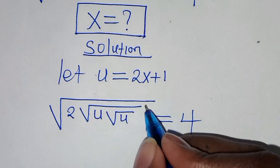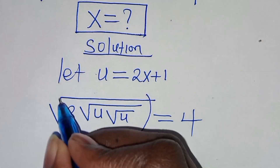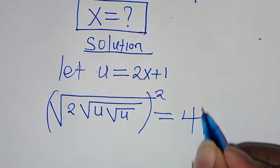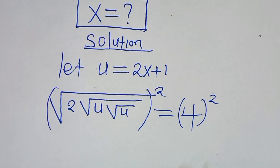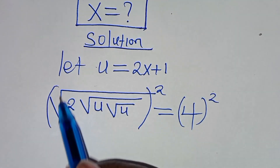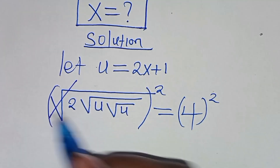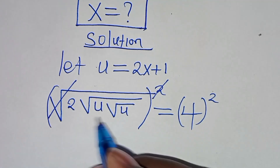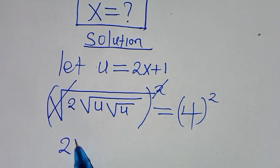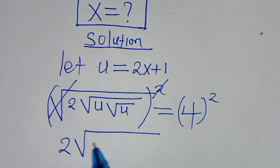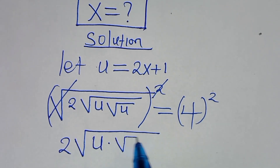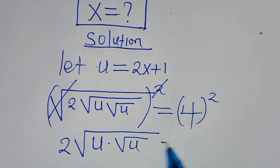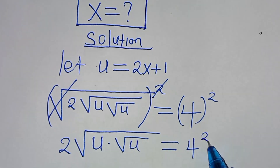The next step from here, let's square both sides so that we can eliminate the square root sign. Let's start with the first square root sign. By squaring, we are going to eliminate the first square root sign so that we have 2 multiplied by square root of u multiplied by square root of u. This is equal to 4 raised to the power of 2.